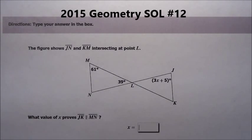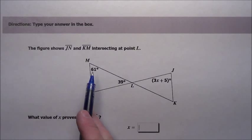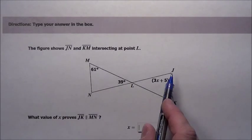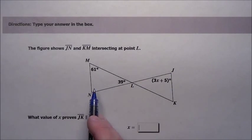Okay, problem number 12. It says the figure shows JN, J to N, and KM intersecting at point L. Okay, they intersect.